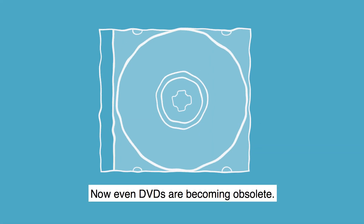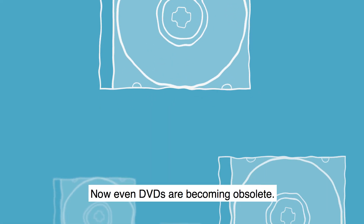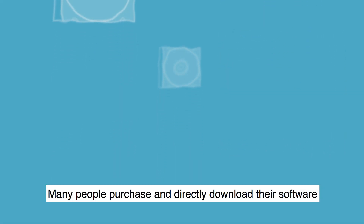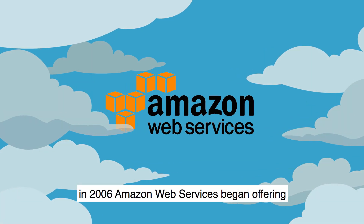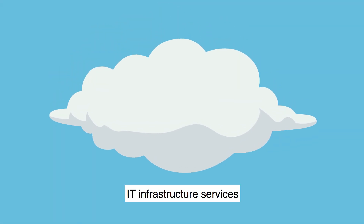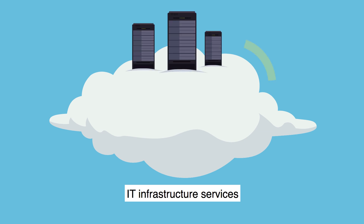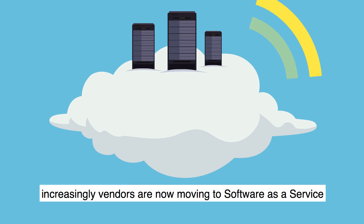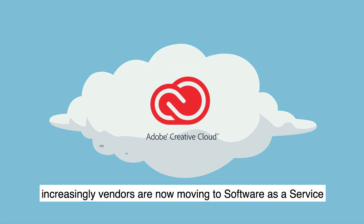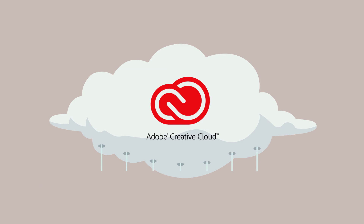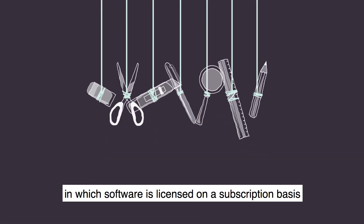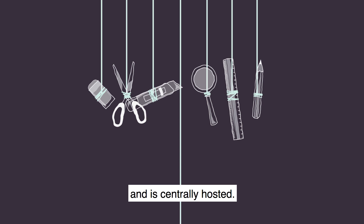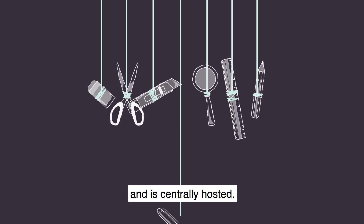Now even DVDs are becoming obsolete. Many people purchase and directly download their software. In 2006, Amazon Web Services began offering IT infrastructure services. Increasingly, vendors are moving to software as a service — SaaS — a software licensing and delivery model in which software is licensed on a subscription basis and is centrally hosted.